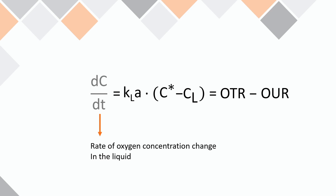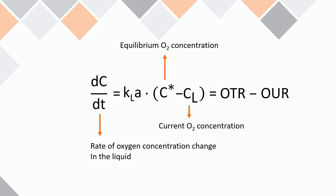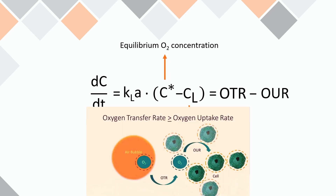This equation shows that the rate of change of oxygen concentration in the cultivation medium is dependent on the mass transfer coefficient and the difference between the current oxygen concentration and the maximal possible — or equilibrium — concentration. Simultaneously, the rate of change of oxygen concentration equals the difference between the oxygen transfer rate (OTR) and the oxygen uptake rate by the microorganism cells. If OTR is higher than the uptake rate, the medium will get saturated by oxygen until reaching equilibrium concentration.